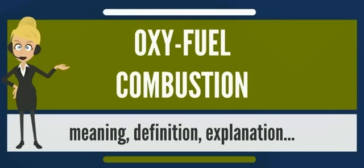Almost all of the nitrogen is removed from input air, yielding a stream that is approximately 95% oxygen. Firing with pure oxygen would result in too high a flame temperature, so the mixture is diluted by mixing with recycled flue gas or staged combustion. The recycled flue gas can also be used to carry fuel into the boiler and ensure adequate convective heat transfer to all boiler areas.